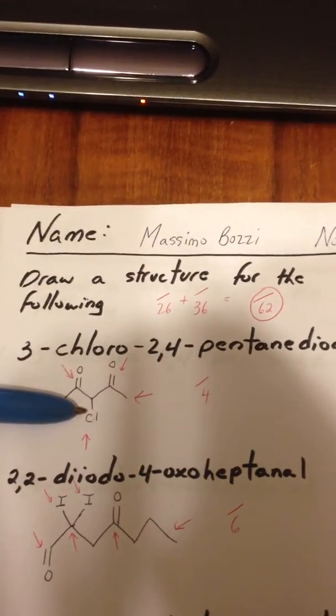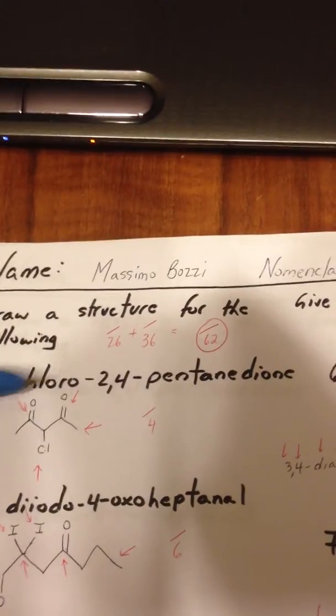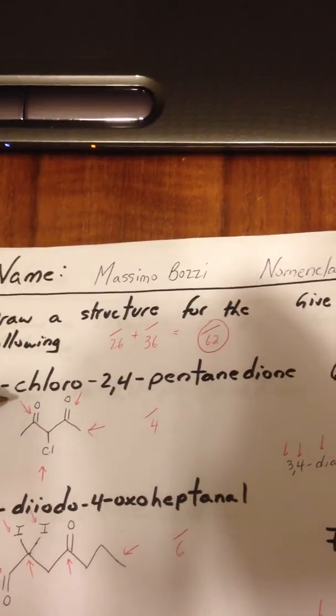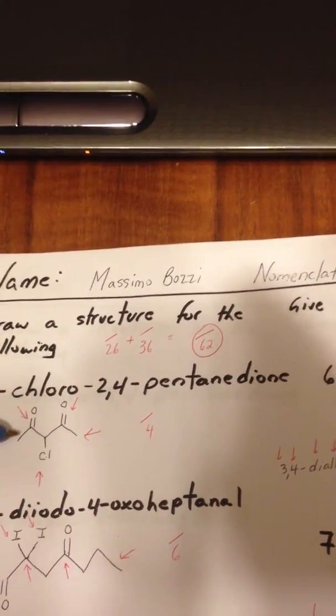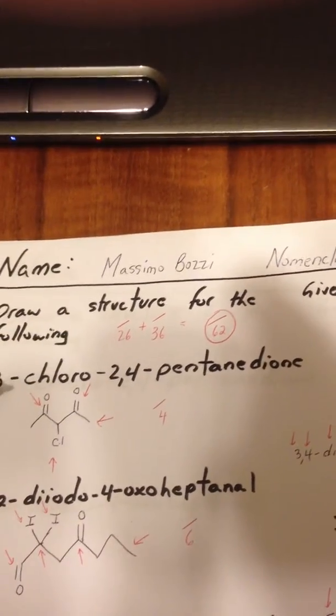3-chloro, the longest chain for number one is 1, 2, 3, 4, 5 carbons long, so it's a pentane skeleton. It's got two ketones on it, and the chlorine atom is at the third position, so we call it 3-chloro-2,4-pentanedione.